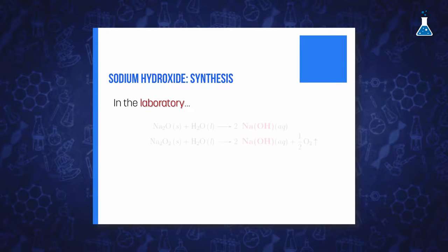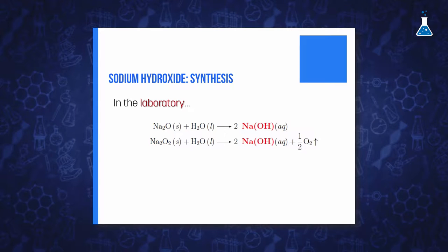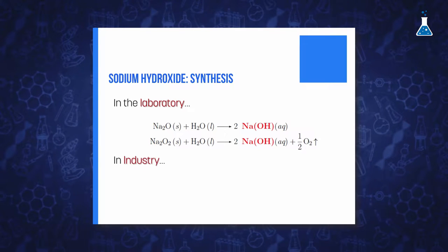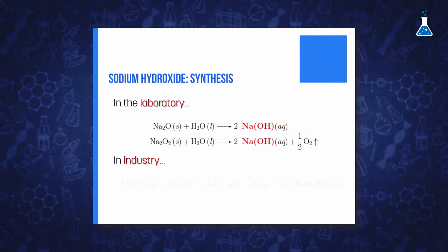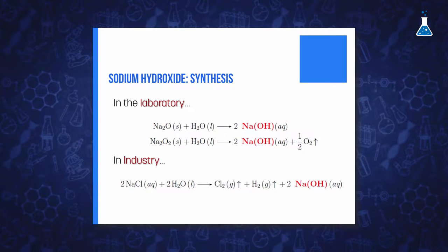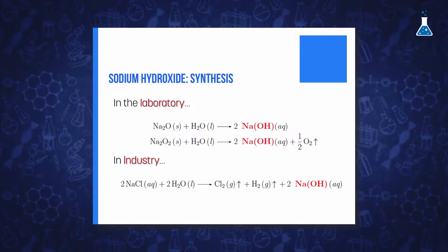In the laboratory, it can be easily obtained by reaction of sodium oxide or peroxide with water, whereas its industrial synthesis is carried out by electrolysis of brine. This is an aqueous sodium chloride around 6 molar concentration.